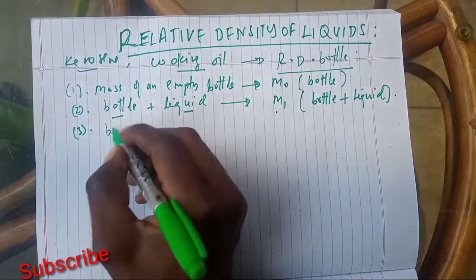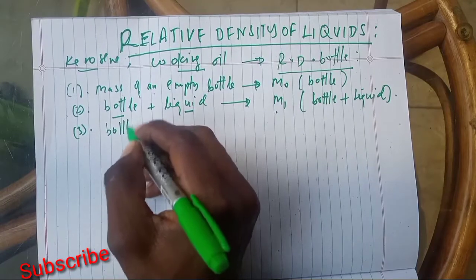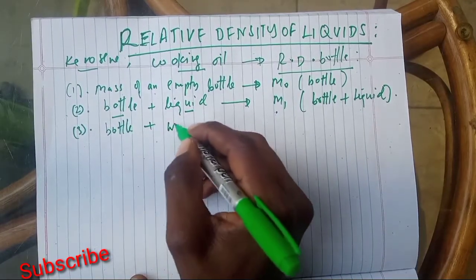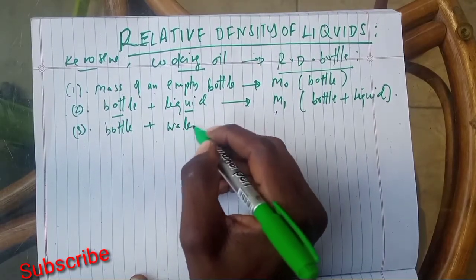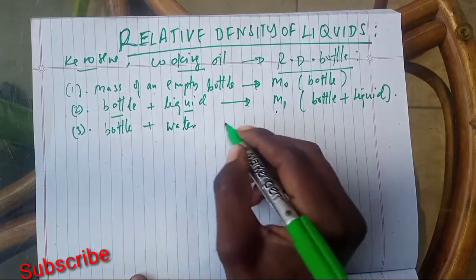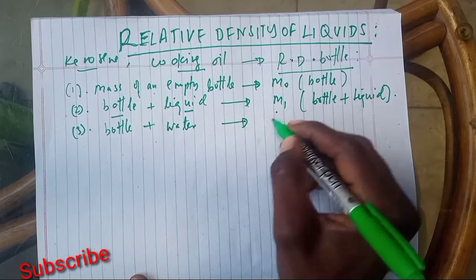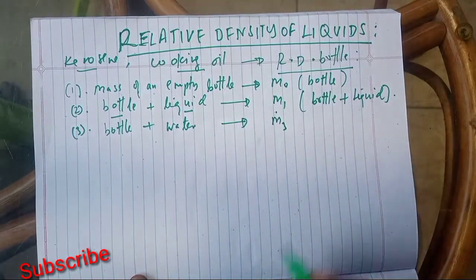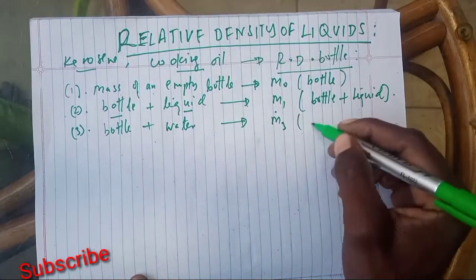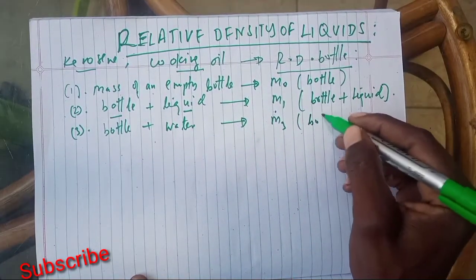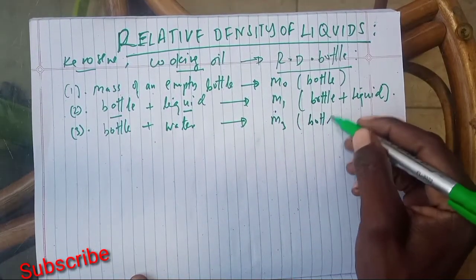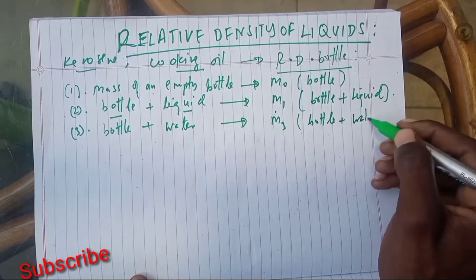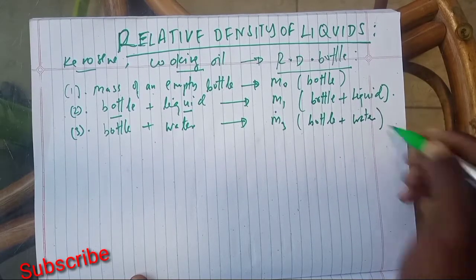Then you measure the bottle plus water, and you call it the third mass — M2. This is the mass of the bottle plus water.